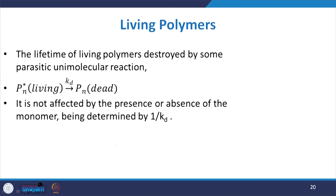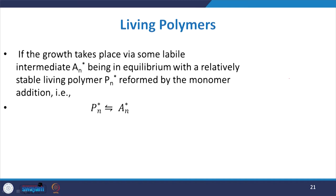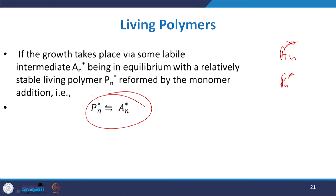The lifetime of a living polymer destroyed by some parasitic unimolecular reaction is given by: P*n(living) → P*n(dead), with rate constant Kd. The lifetime is usually not affected by the presence or absence of monomer and is determined by 1/Kd. If the growth takes place via a labile intermediate An* in equilibrium with the relatively stable living polymer Pn, reformed by monomer addition, then this is represented as Pn* in equilibrium with An*.